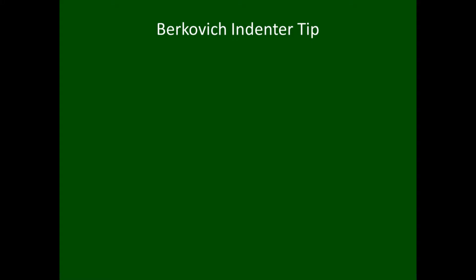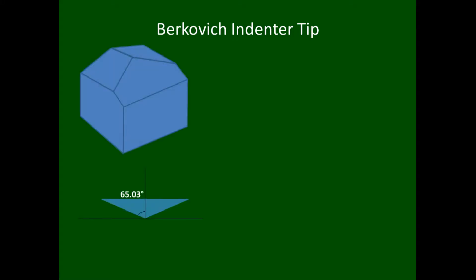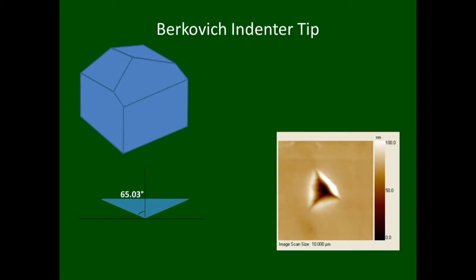In nano indentation, we typically use a Berkovich indenting tip. Here we see the geometry for the Berkovich. You can see that it is a three-sided pyramid as opposed to the Vickers, which is four-sided. We prefer to use the Berkovich for nano indentation because with its geometry, a much sharper tip can be made. With this geometry, it is possible to get the indenter to have a tip radius smaller than 20 nanometers. Here we can see a typical indent left from the Berkovich tip.